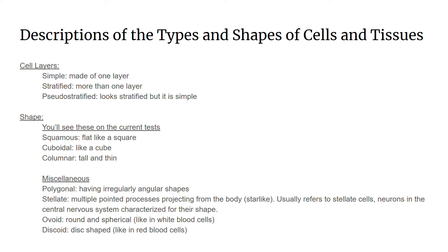The terms for shapes of the cell are listed below. The most common ones are squamous, which means flat, like perhaps just a 2D square; cuboidal, which means 3D and looks like a cube; and columnar, which means tall and thin.